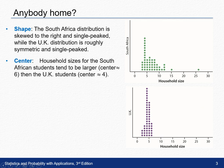The center of the household sizes for South African students tends to be a little bit higher. There tends to be about six people living in a household, whereas in the UK it's a little bit lower with four people living in the household.